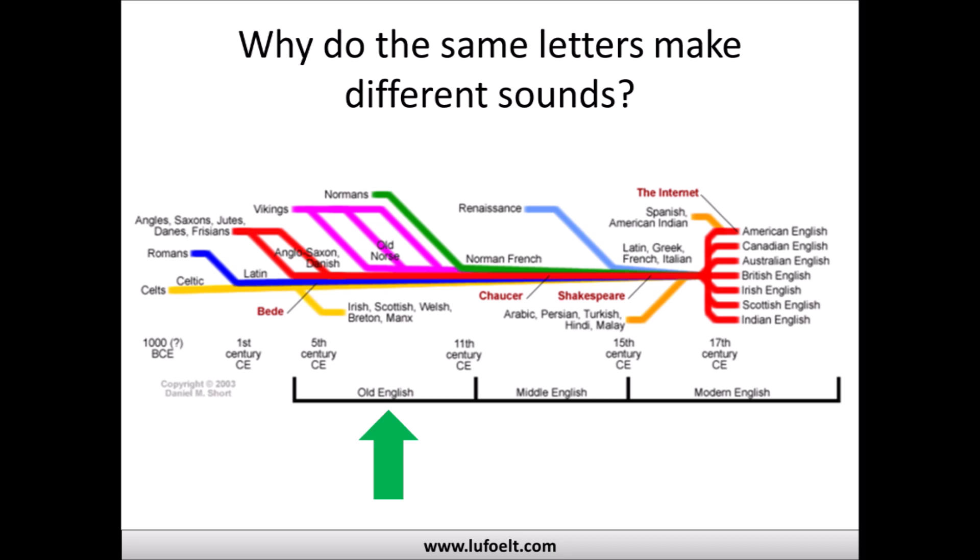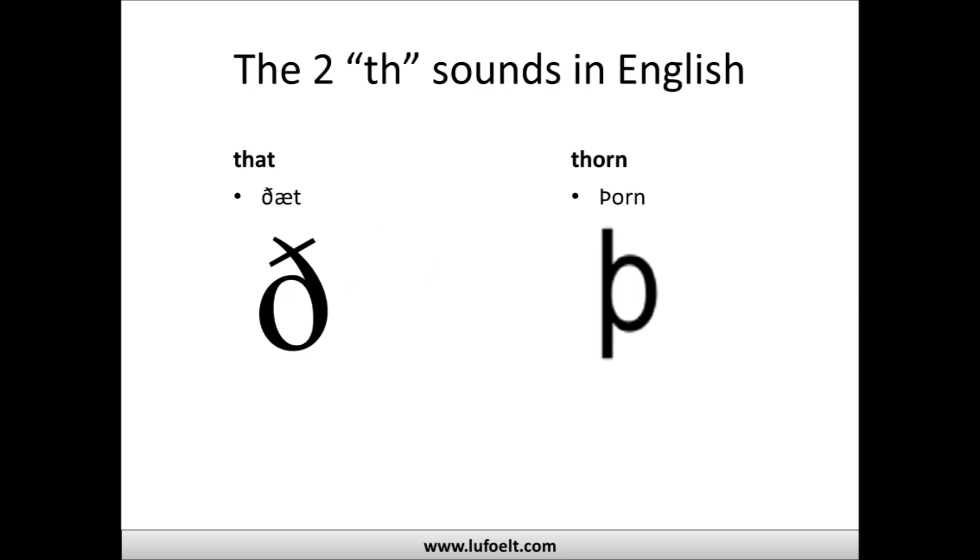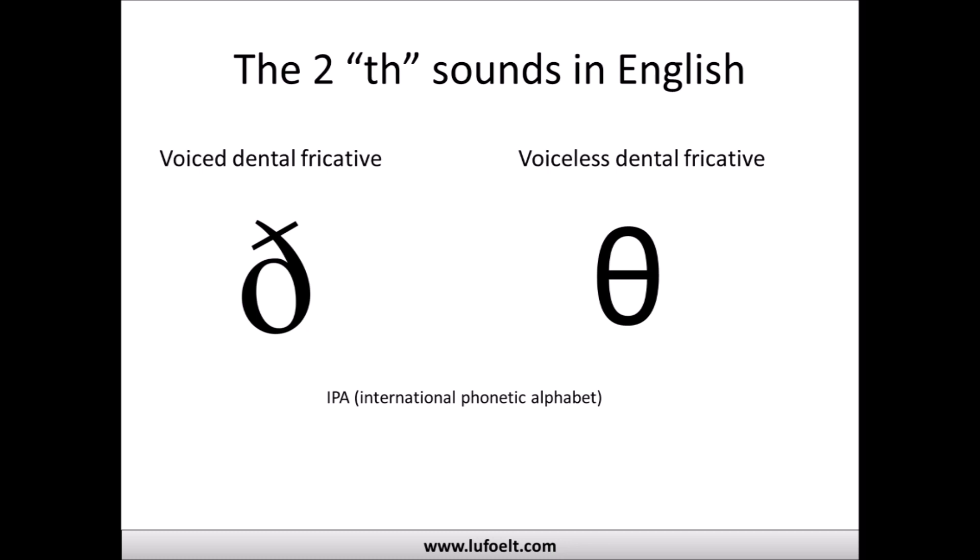The two TH sounds in English, as I said, come from Old English, and the original letters were 'eth' and 'thorn,' as you can see on the screen. These letters come from the Old English alphabet. These days we've changed the name and even changed one of the letters representing this phoneme — we don't call it eth and thorn anymore. Now we use the IPA, or International Phonetic Alphabet, to understand English pronunciation.